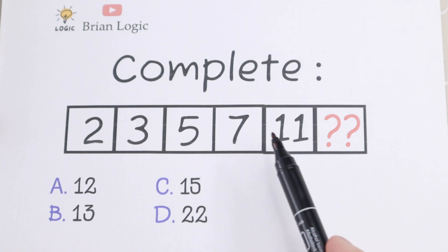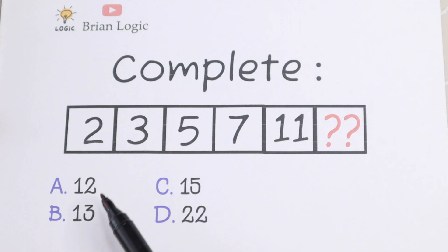So we have 2, 3, 5, 7, 11 and we need to find the last number. Right here on the bottom we have a lot of options: A, B, C and D.